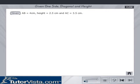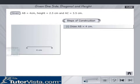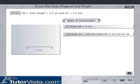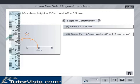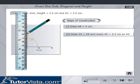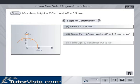The construction is as follows. Draw AB is equal to 4 cm. Draw AX perpendicular to AB and make AE is equal to 2.5 cm on AX. Through E, construct PQ parallel to AB.